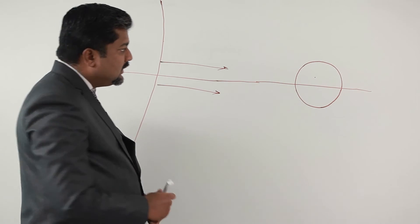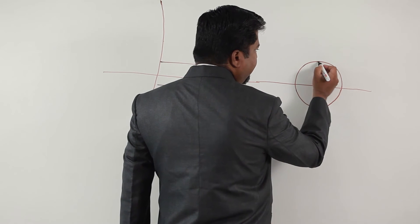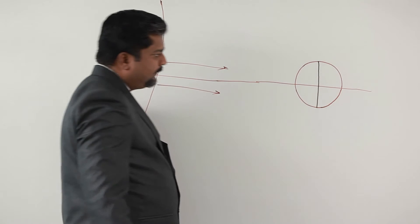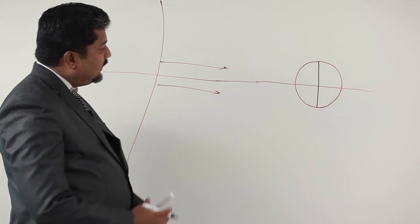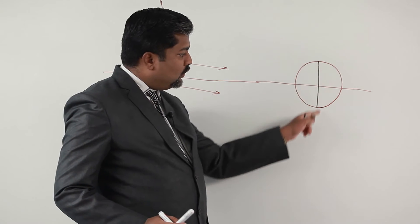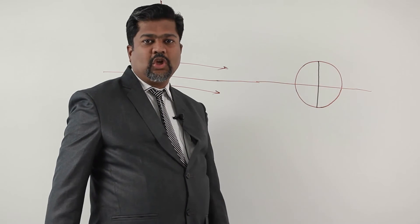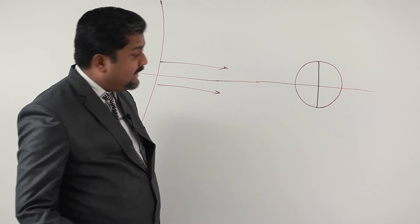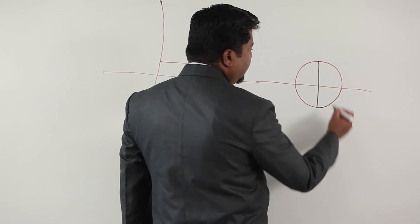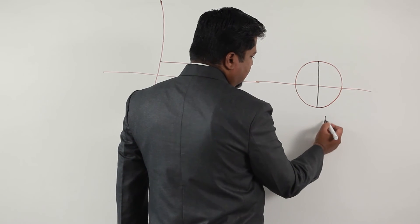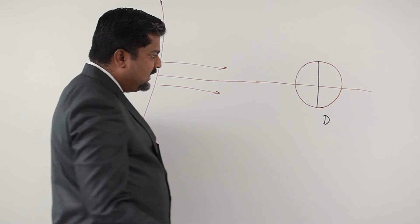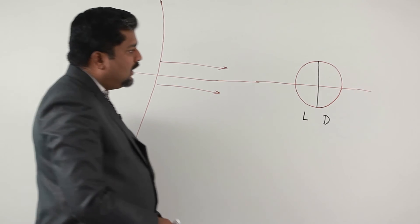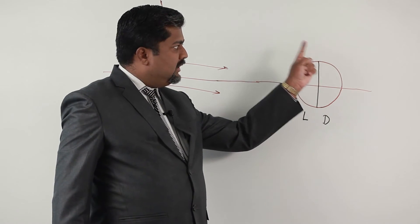Now, if you observe from a side view, it is obvious that Sun rays will reach only this part of Earth. On this part, Sun rays will not reach — this is the dark part, whereas this is the daytime or lighted part. I am writing D here — D stands for the dark part, not day. And this is the lighted part. Earth is revolving in this way.